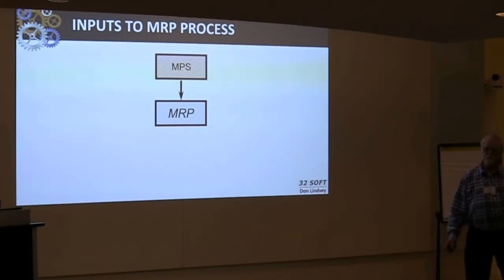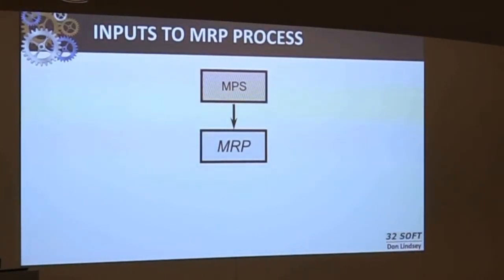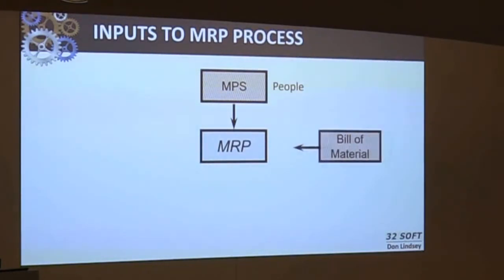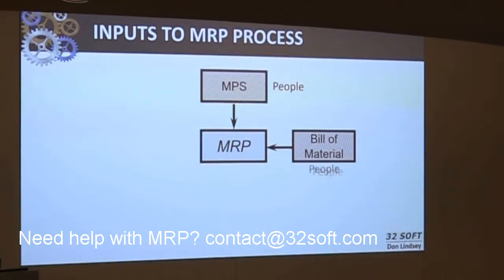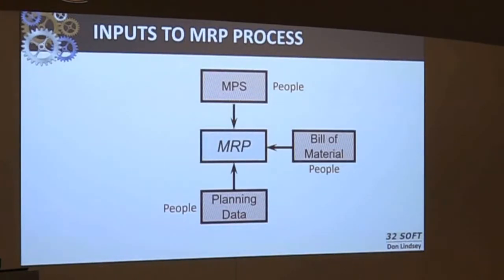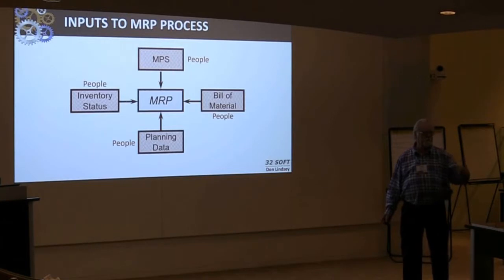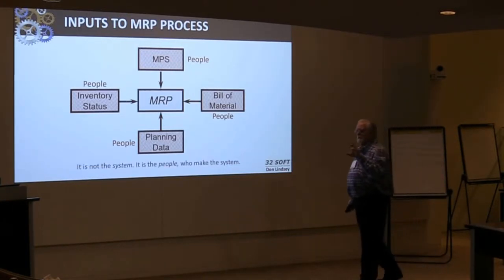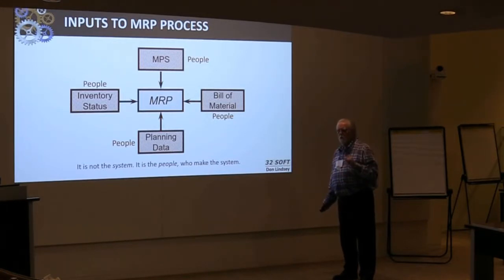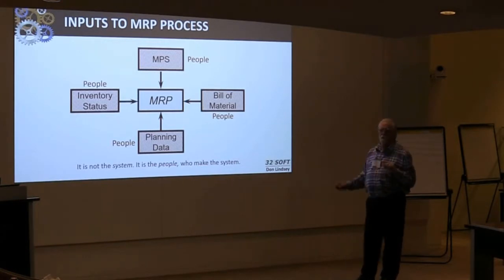MRP has several inputs. First, the master schedule — the schedule of end items you're going to make and ship to the customer. Second, bills of material — how the parent-component relationship is structured. Third, planning data in 1.4.7 and 1.4.17 — your lead times, order policies, yields. Fourth, inventory status — your quantity on hand. All of these require people. So when someone says the system doesn't work, it's not the system — it's the people that run the system.